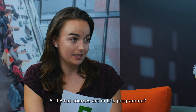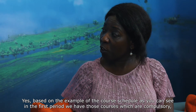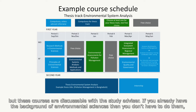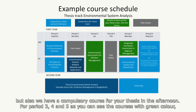What courses are in this program? Based on the example course schedule, in the first period we have compulsory courses, but these are discussable with the study advisor — if you already have a background in environmental sciences, you don't have to do them and can choose any other course. In period two, we have a free choice course so students can do anything from any chair group they wish, but also a compulsory course for your thesis in the afternoon.